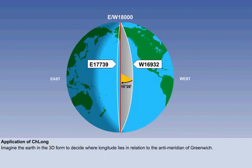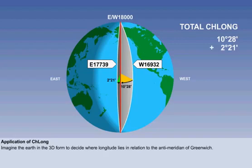Secondly, from the east 17739 meridian to the east-west 18000 meridian is 2 degrees 21 minutes. The total Chellong must therefore be 10 degrees 28 minutes plus 2 degrees 21 minutes, which is 12 degrees 49 minutes.